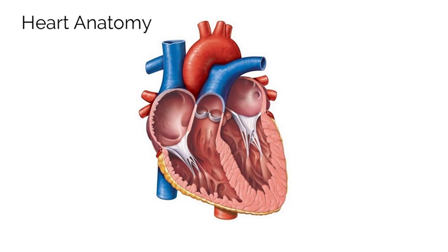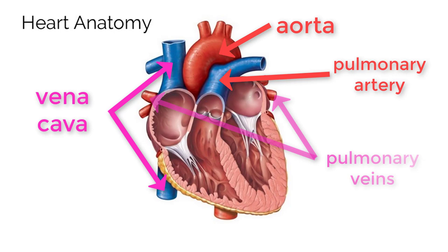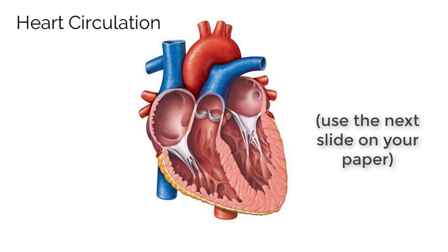Other important structures include the arteries and veins directly attached to the heart. For arteries, we have the aorta and the pulmonary artery. For veins, we have the vena cava and the pulmonary veins.